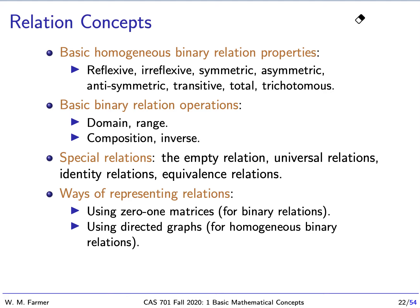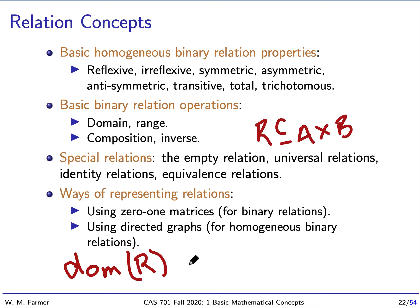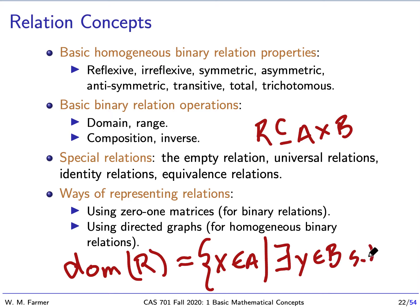We also have basic binary relation operations: we can compute the domain and range of a relation, compose relations, and take the inverse. The domain of a binary relation R on A cross B would be all x in A such that there exists a y in B such that (x, y) is in R.